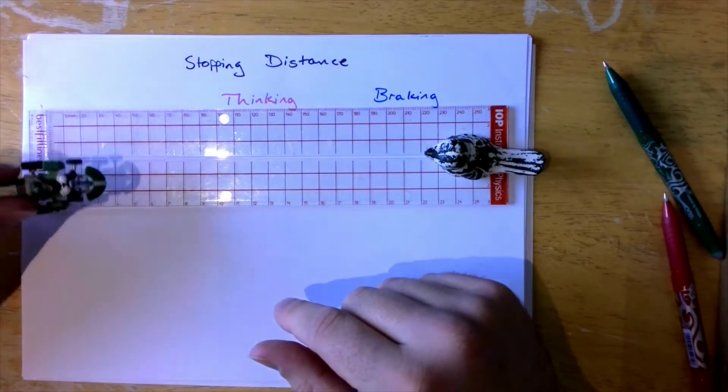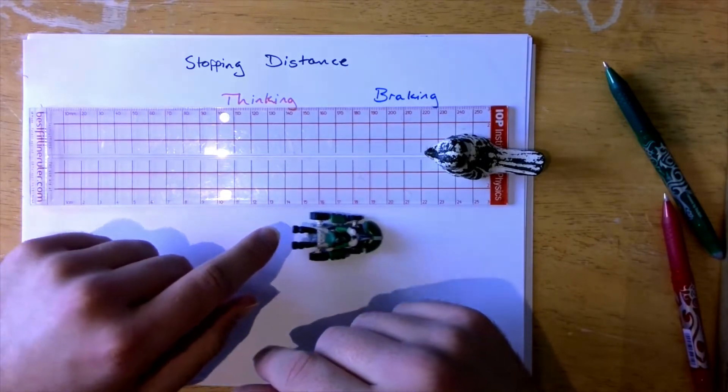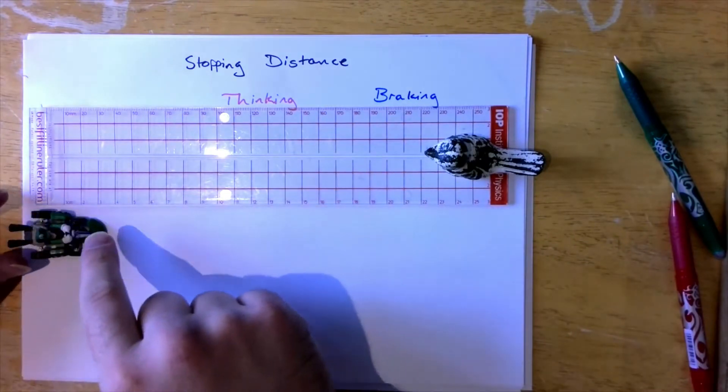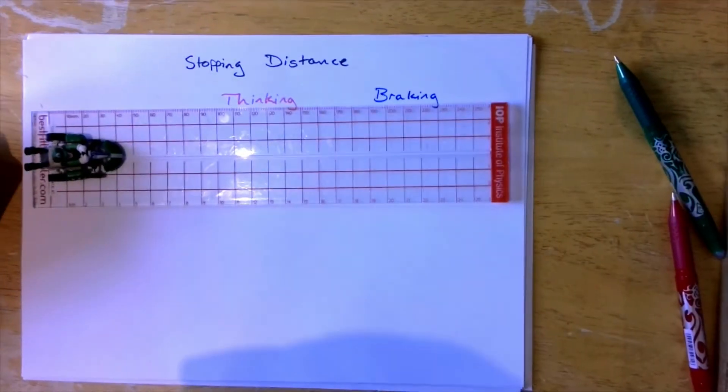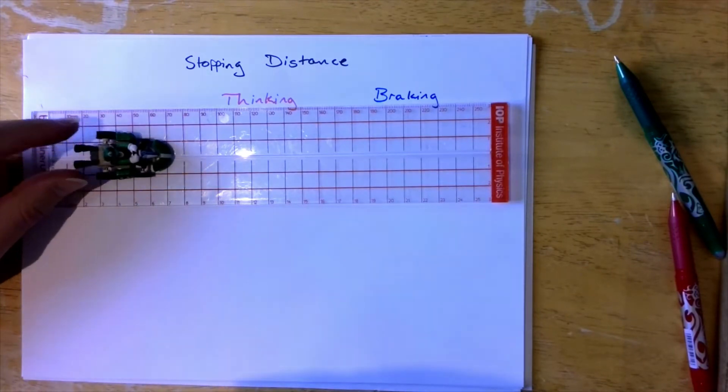So first off what we're going to do is we're going to imagine that this little green car is driving down the road having a great old time. As far as the driver is aware there is no hazard in front of him and because of that he's just going to be coasting along as normal.